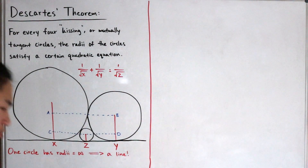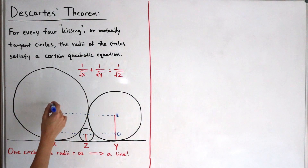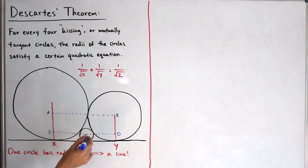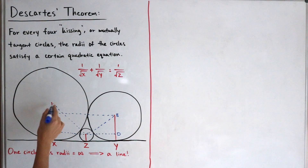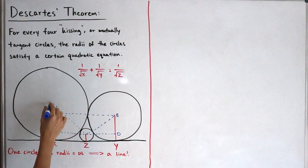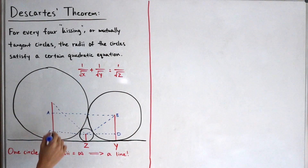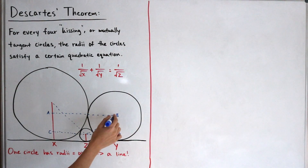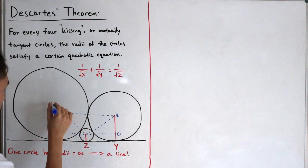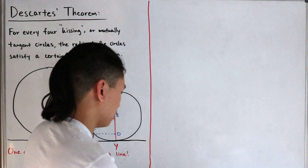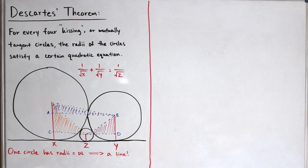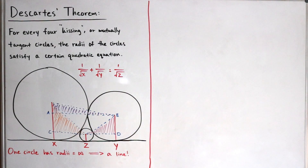Let's actually continue a little further and draw more line segments so that we actually form a little triangle. I'll connect the center of this circle all the way to the connection of this circle over here. And then one more line segment connecting from here to the center of circle X with radius X, and then the center of the circle with radius Y. So I'm going to fill in our triangles with a different color.